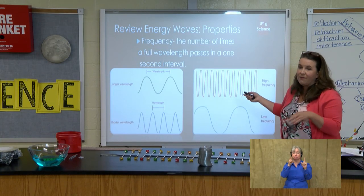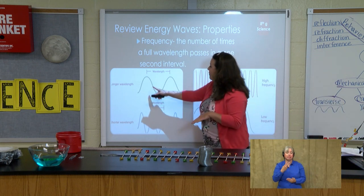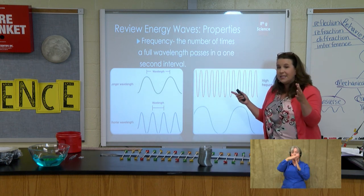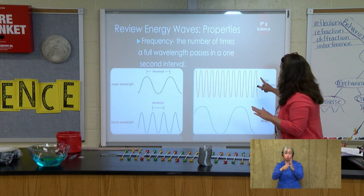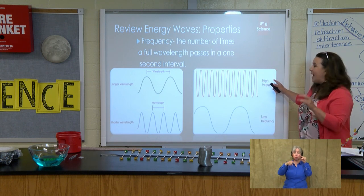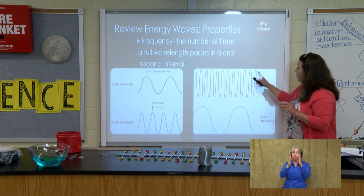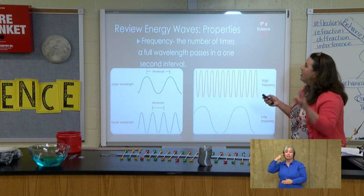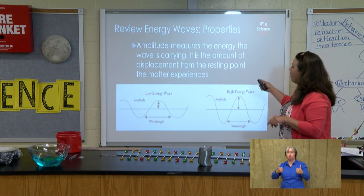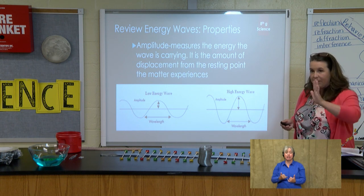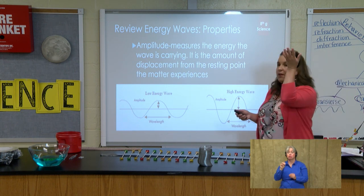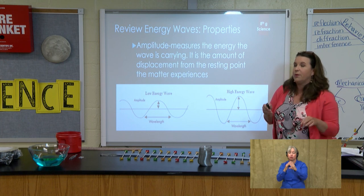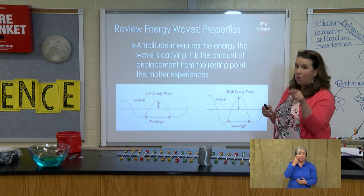In a transverse wave, frequency is easy to see. The wavelength goes from crest to crest, or trough to trough, and you can see we can have shorter wavelengths. A shorter wavelength means the waves are closer together, giving us high frequency; farther apart gives us low frequency. One other wave property we need to be familiar with is amplitude — the more energy I put into that wave, the higher the amplitude.